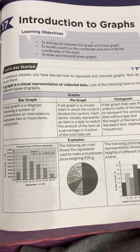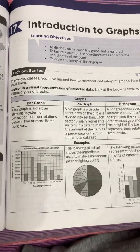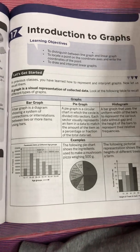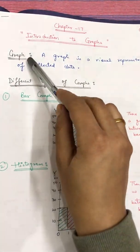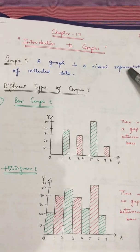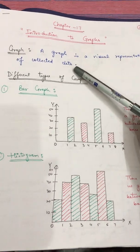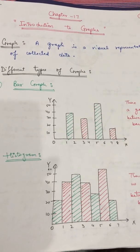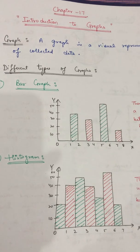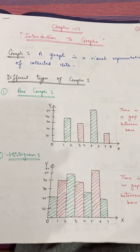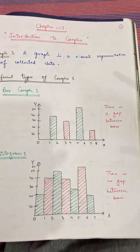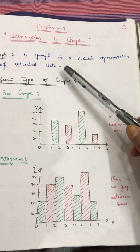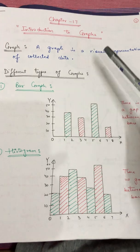Good morning everyone. Today we are going to start Chapter 17, that is Introduction to Graphs. A graph is a visual representation of collected data. Whatever data is given to us, whether in the form of a statement or in the form of a table, we represent that in the form of pictures, diagrams, etc. This visual representation of any data is known as a graph.